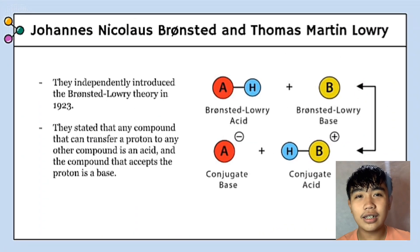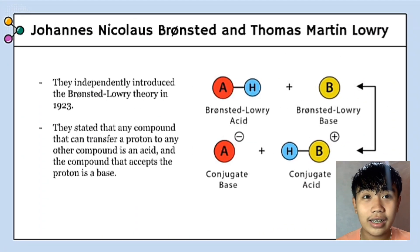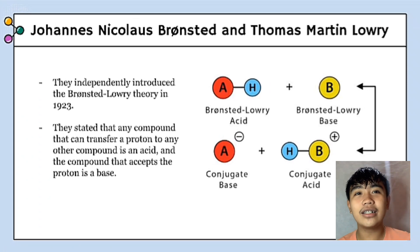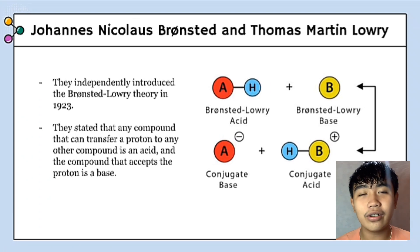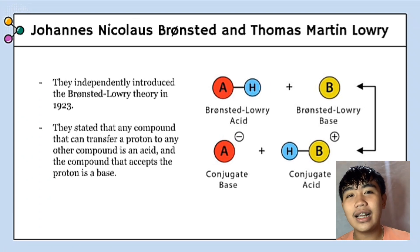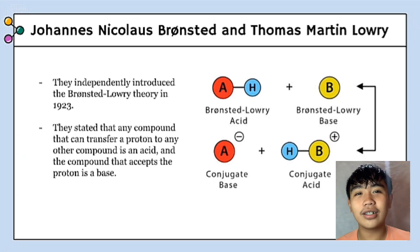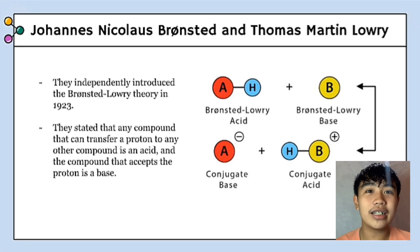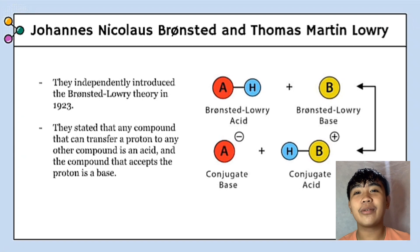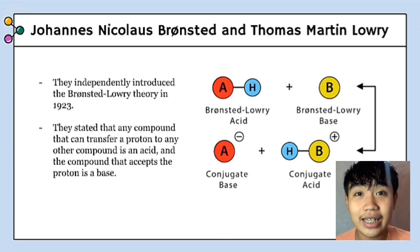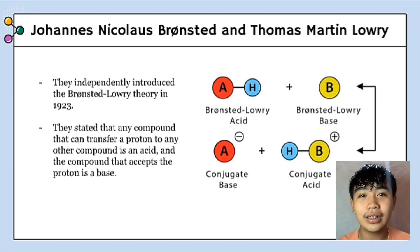Johannes Nicholas Bronsted and Thomas Martin Lowery independently introduced the Bronsted-Lowery theory in 1923. They stated that any compound that can transfer a proton to any other compound is an acid, and the compound that accepts the proton is a base, as you can see in the graph.